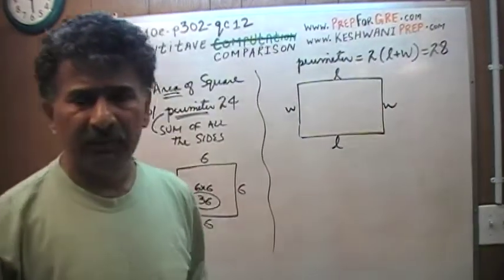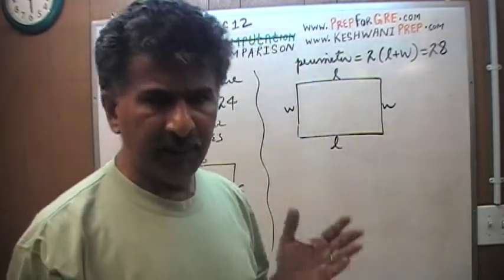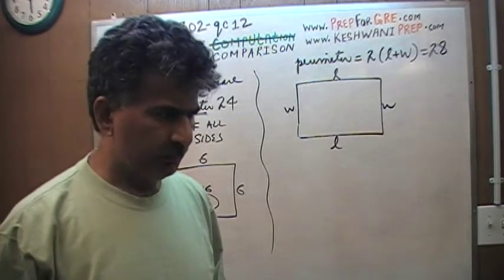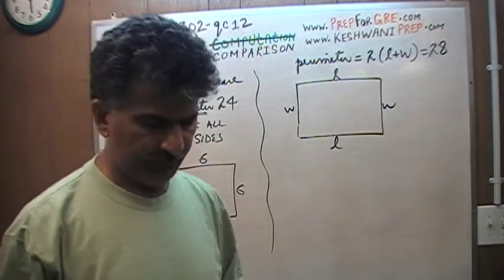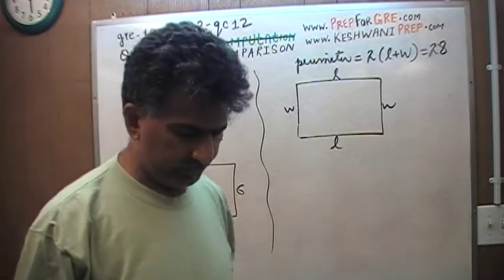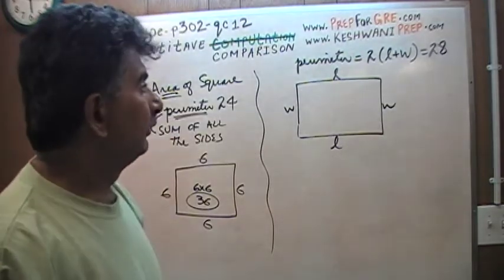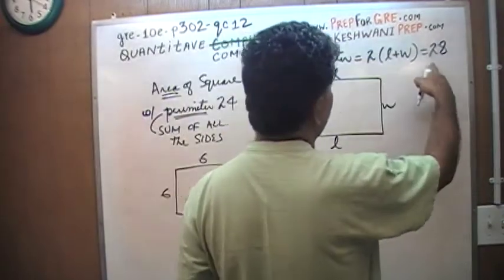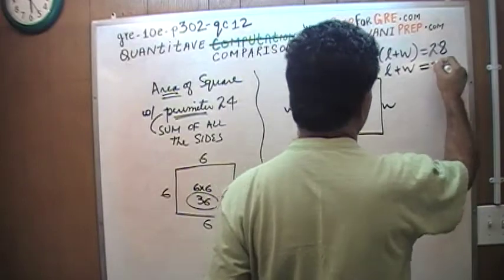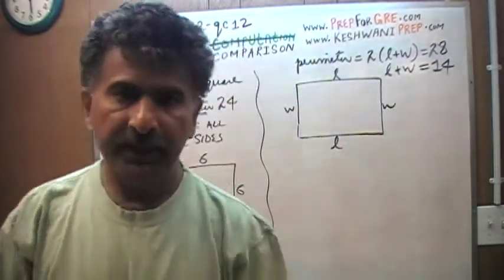I tend to explain a lot, but when you're doing it yourself, you don't have to explain it to anybody. I explain a lot because one never knows whom one is dealing with. I don't know what your background is. So therefore the length plus width, if 2 times length plus width is 28, that tells me the length plus width has to be 14.